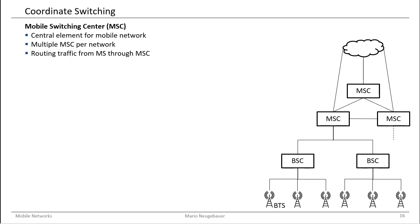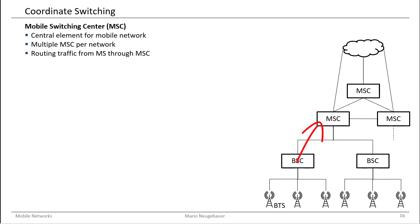Now we go a step up in the hierarchy of our network — we go into the network subsystem. In this central part of our mobile network, we have to place mobile switching centers and other components. These mobile switching centers connect the base station controllers to each other and aggregate them, so that the traffic for mobile calls and data can be routed in the network.